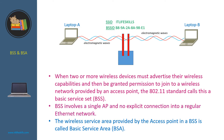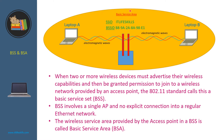BSS involves a single access point with no explicit connection into a regular Ethernet network. The wireless service area provided by the access point in a BSS is called the Basic Service Area or BSA. In this network diagram, when Laptop A and Laptop B must advertise their wireless capabilities to join the wireless network provided by this access point, they form a Basic Service Set, and the wireless service area provided by the access point is the Basic Service Area.